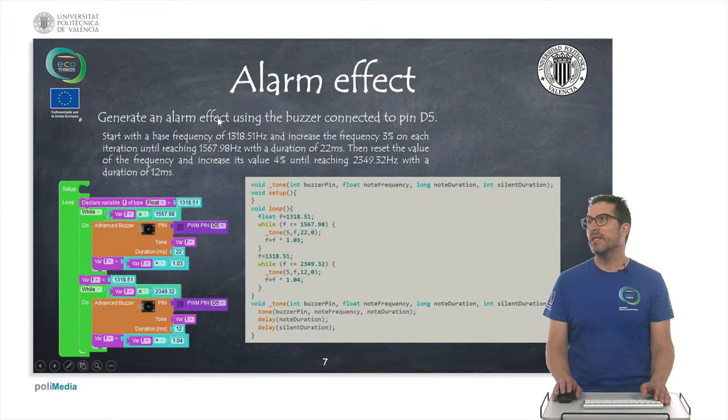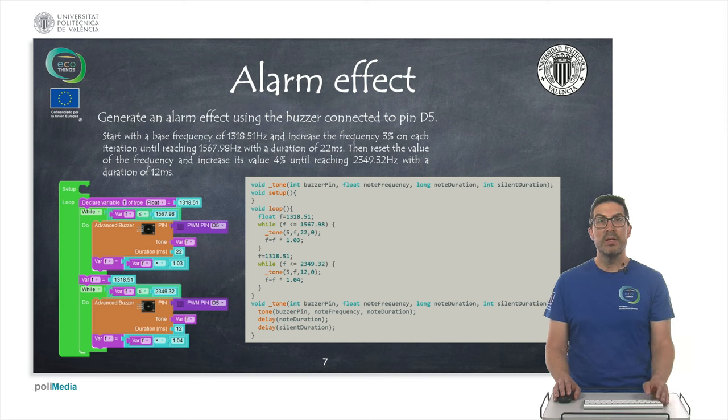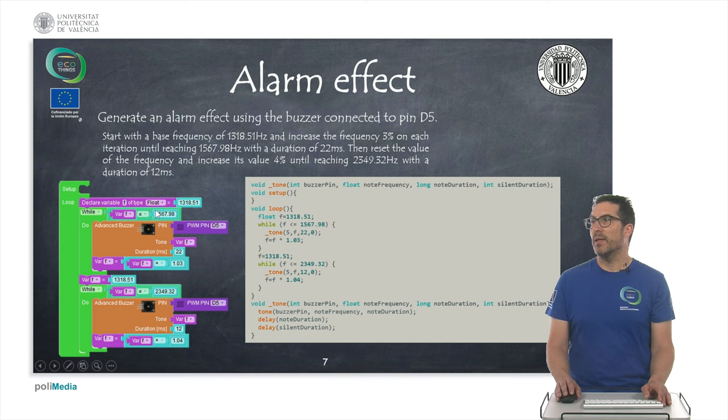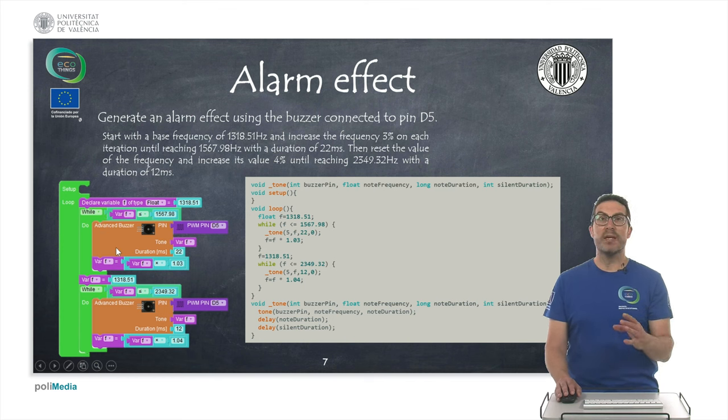The third example is an alarm effect that will generate, in this case, a varying frequency using a buzzer. And in this case, what we want to do is we want to do some kind of a for loop, or in this case it's a while loop, but it's equivalent. We want to increase every time we repeat something within this loop - we want to increase the frequency of the buzzer until we reach a given amount of frequency. And then we want to do the opposite, so we slow down. We start with a different frequency, or with the same frequency, and we finish with a different frequency, but the increment is different. In the end, the combination of these two instructions will basically generate some kind of alarm effect.